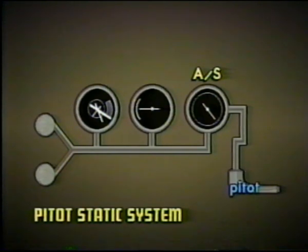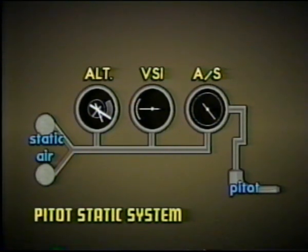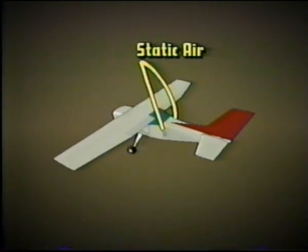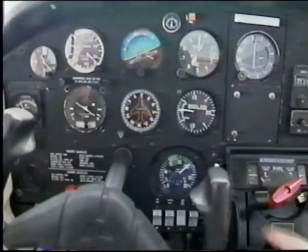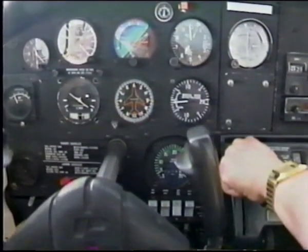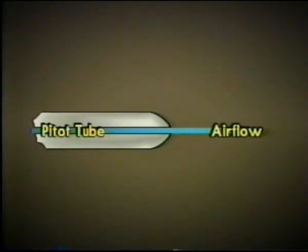The airspeed indicator is also connected to the static pressure tube, as are the altimeter and vertical speed indicator. The static pressure tube allows atmospheric pressure to equalize during changes in altitude. There are usually two vents on opposite sides of the fuselage where they will not be affected by turbulence or ram air pressures. Having two vents also compensates for errors which might develop from a steep turn or erratic changes in altitude. Errors in the pitot-static system can result if the pitot tube is blocked by dirt, water, or ice. As part of your pre-flight check, the pitot tube and static port openings should be inspected to make sure they are clear.